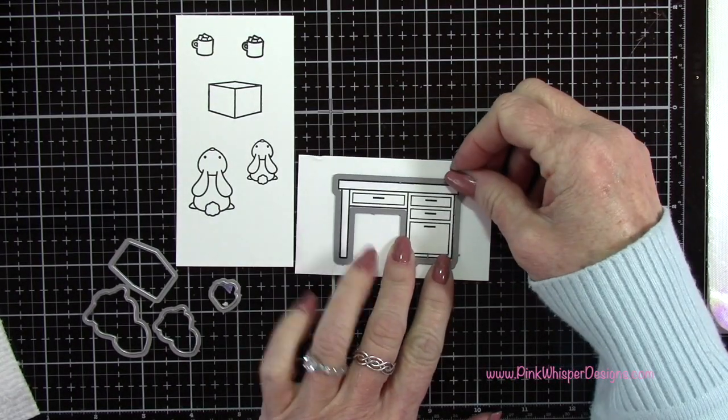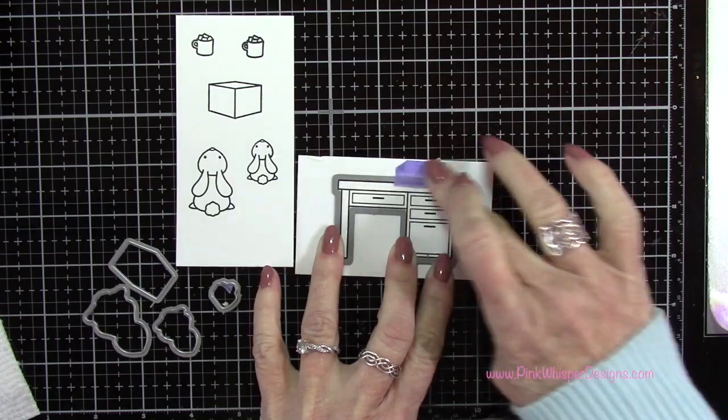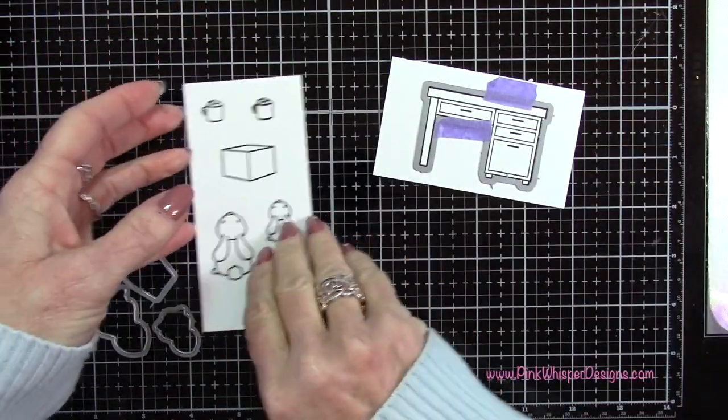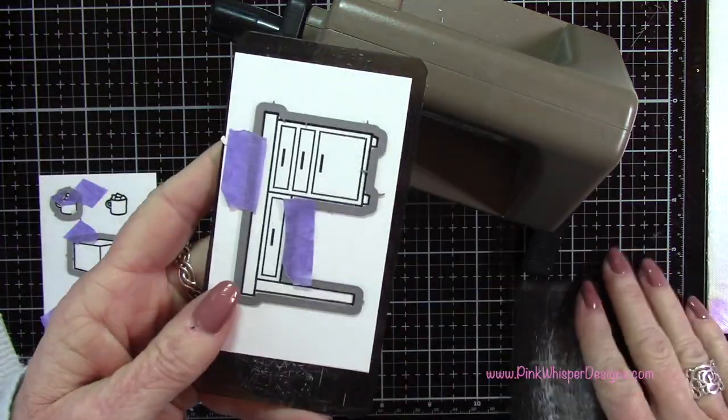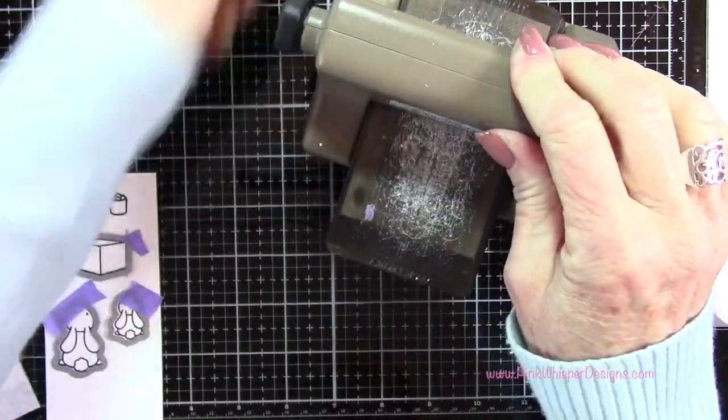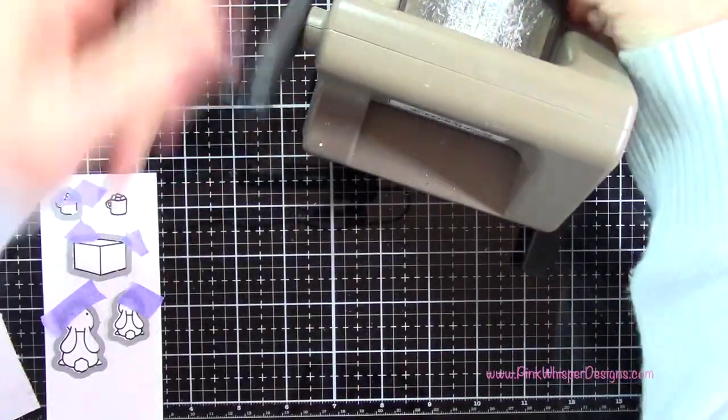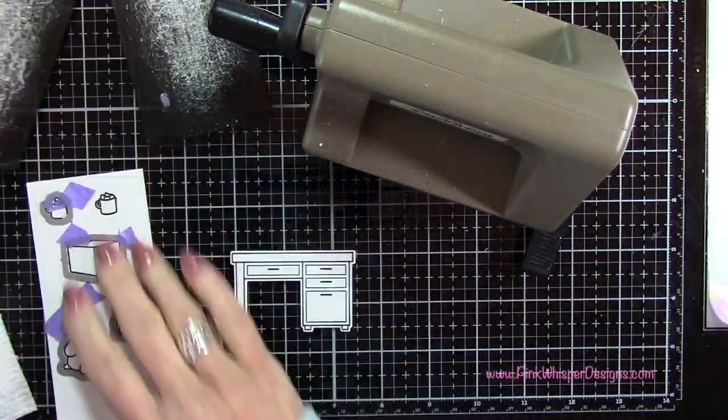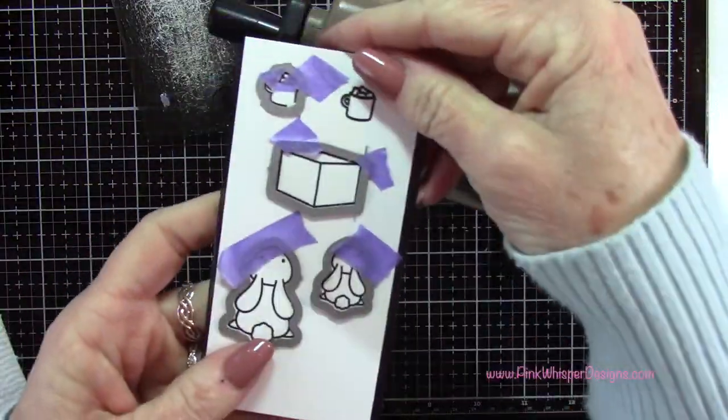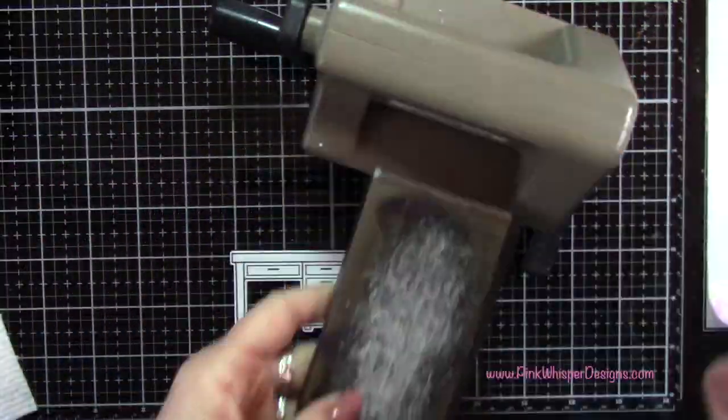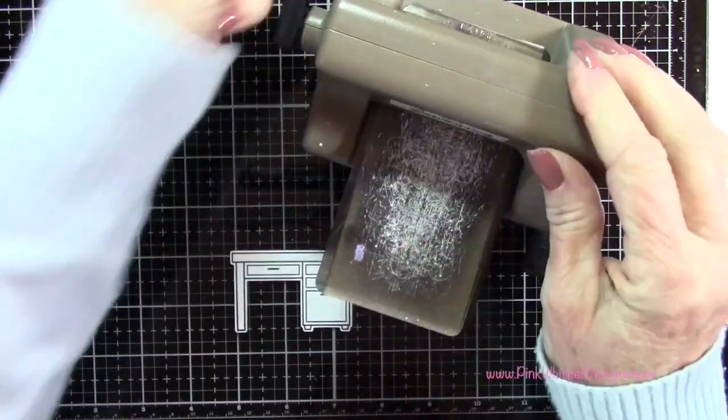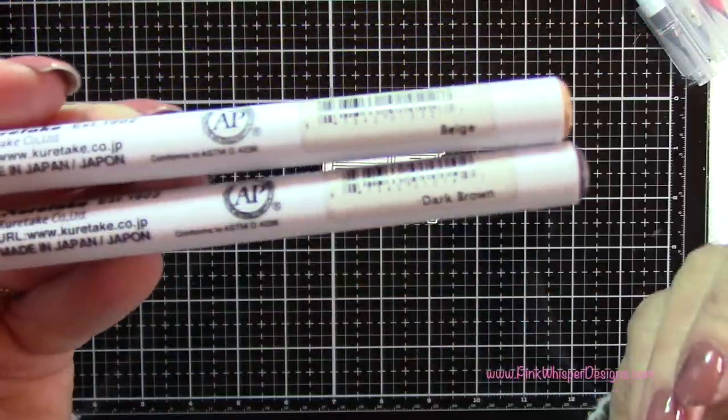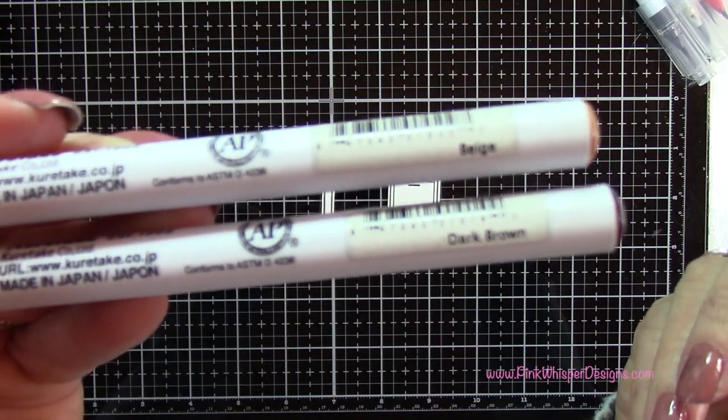Now I've got here the coordinating dies so I'm going to attach those and run this through my Sizzix sidekick machine. Going back to that mini precision press, I just think this is going to be great especially if you're traveling with your stamps. I'm always at friends' houses doing crafty projects or I take it with me when I go on vacation, so I love the idea of this little mini press.